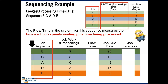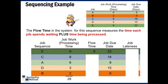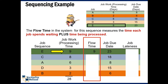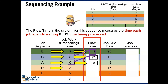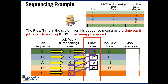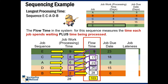After that, we need to find the flow time. The flow time in the system for this sequence measures the time each job spends waiting plus time being processed. For A, the longest processing time is 9, and the due date is 23. For C, the flow time is 9 plus 8, equal to 17. For A, the flow time is 17 plus 6, equal to 23. For D, 23 plus 3 equals 26, and finally for B, 26 plus 2 equals 28. The total flow time for this job sequence is 103.